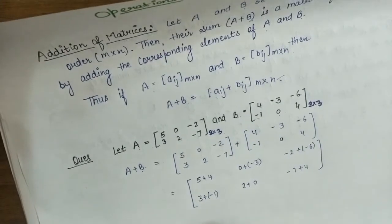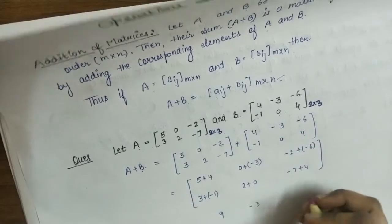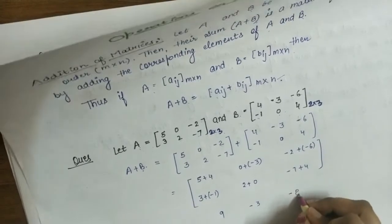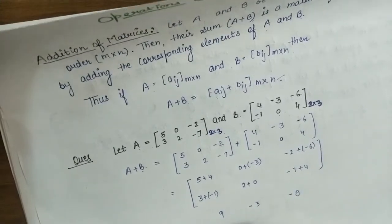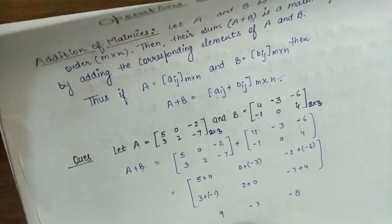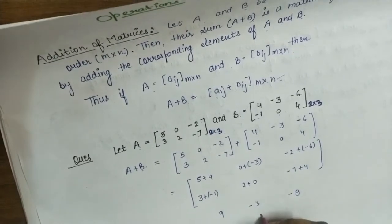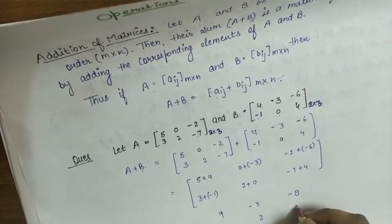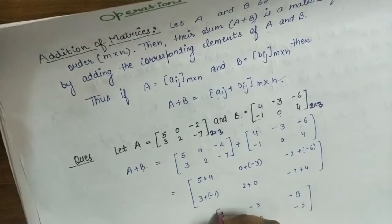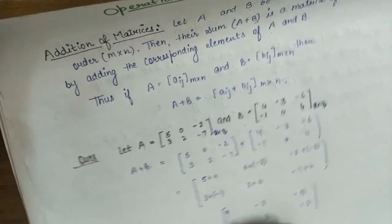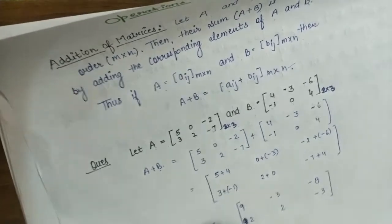So A+B equals [9, -3, -8; 2, 2, -3], which is the required sum of matrices A and B.